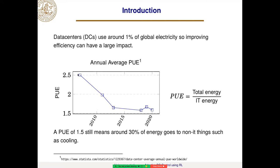In a survey, we can see that the annual average PUE is going down, but it's currently sitting around 1.5. Companies such as Google have quite a lot lower on average, but over a lot of data centers, we get this average.